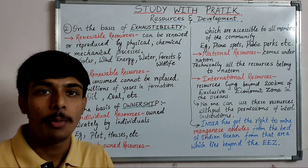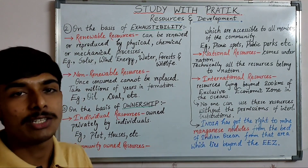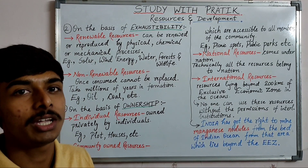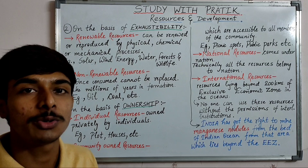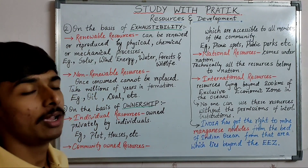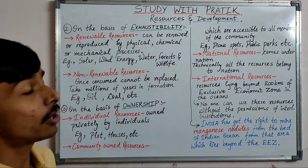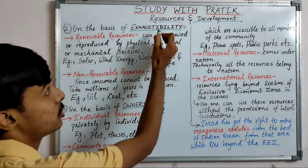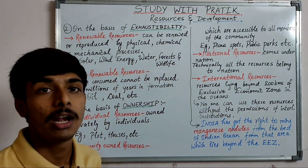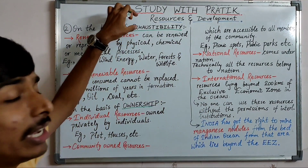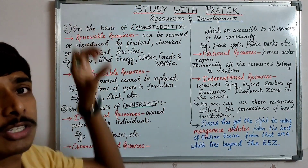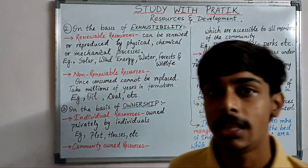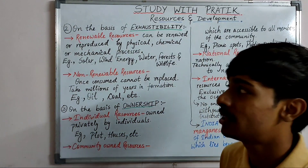Now let's talk about the classification of resources on the basis of exhaustibility — 'samapyata' in Hindi, meaning after a certain time, which resources on our Earth will be exhausted or not. On the basis of exhaustibility, there are two subtypes: renewable resources and non-renewable resources.